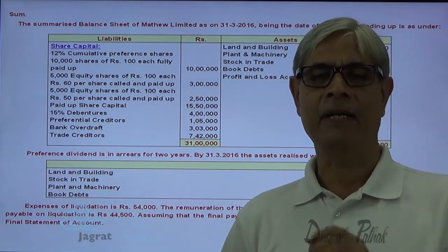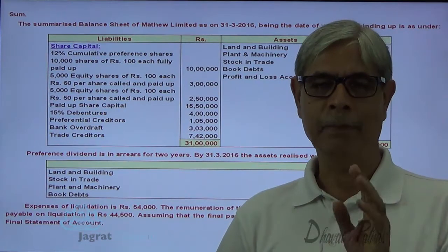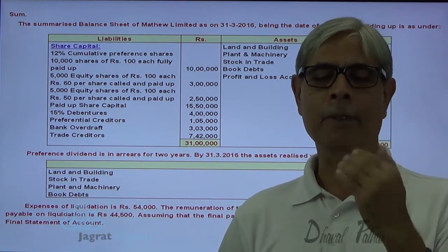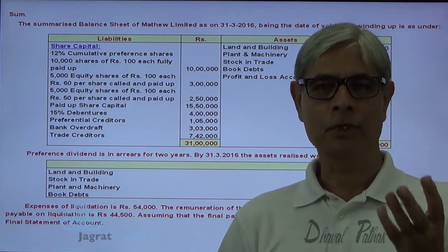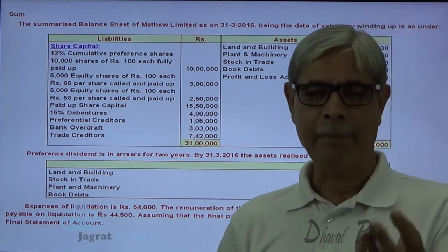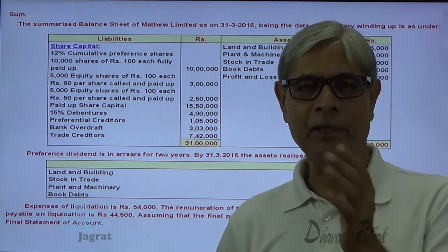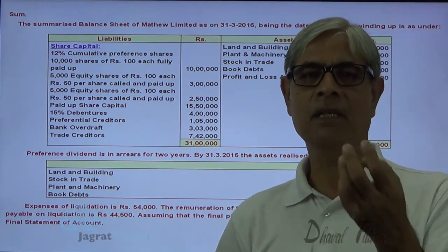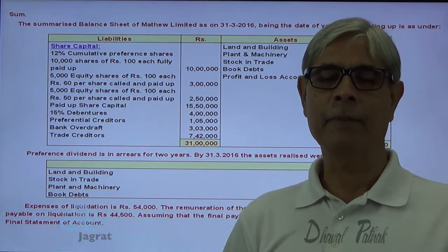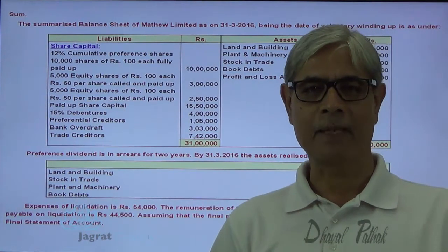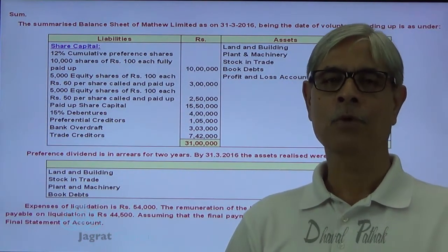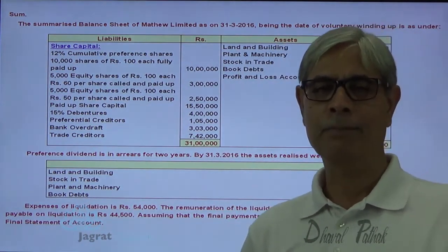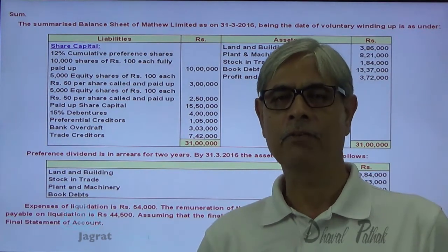A liquidator is appointed in a winding-up process — a legal process by which the existence of a company is brought to an end. The job of a liquidator is to realize the assets and make payment to the creditors of the company and to the claimants against the company as prescribed in law. The order of payment is: first, fully secured creditors; then liquidation expenses and remuneration; then preferential creditors; then debenture holders who hold floating charge over assets; then unsecured creditors; then preference capital; then equity shareholders.